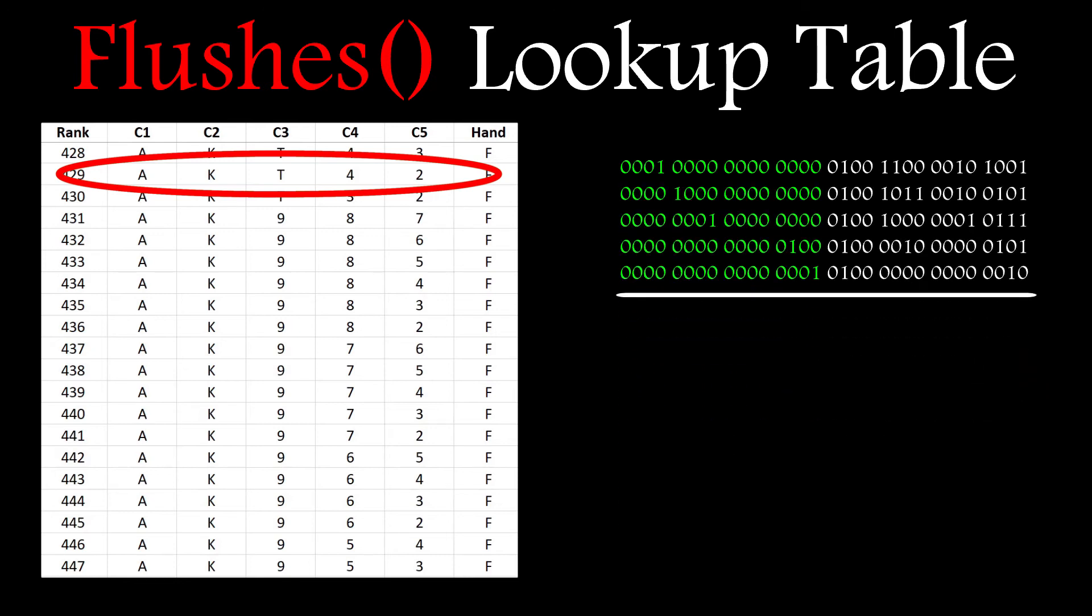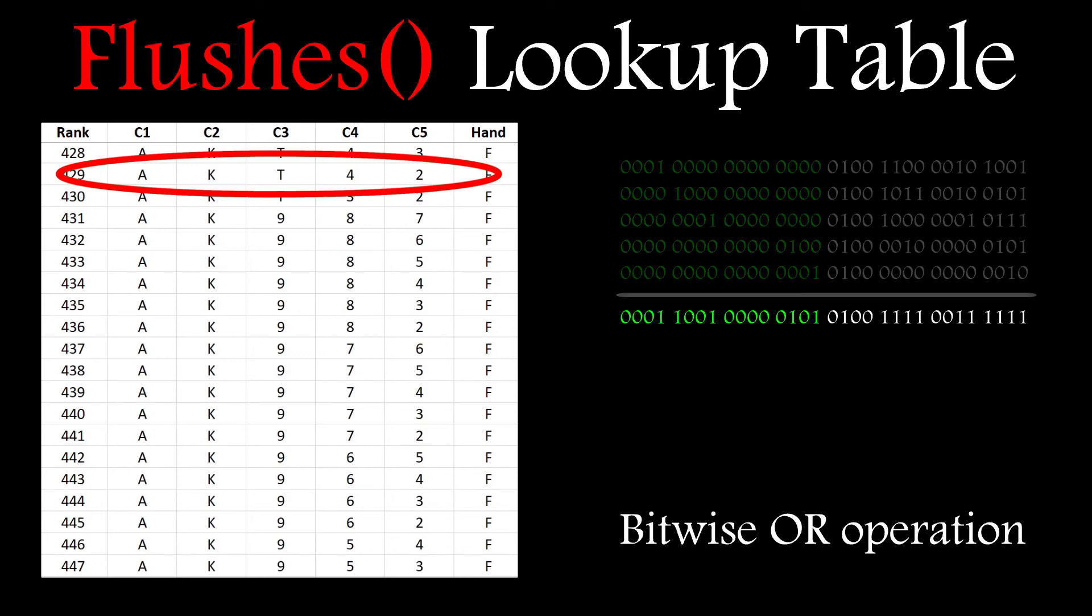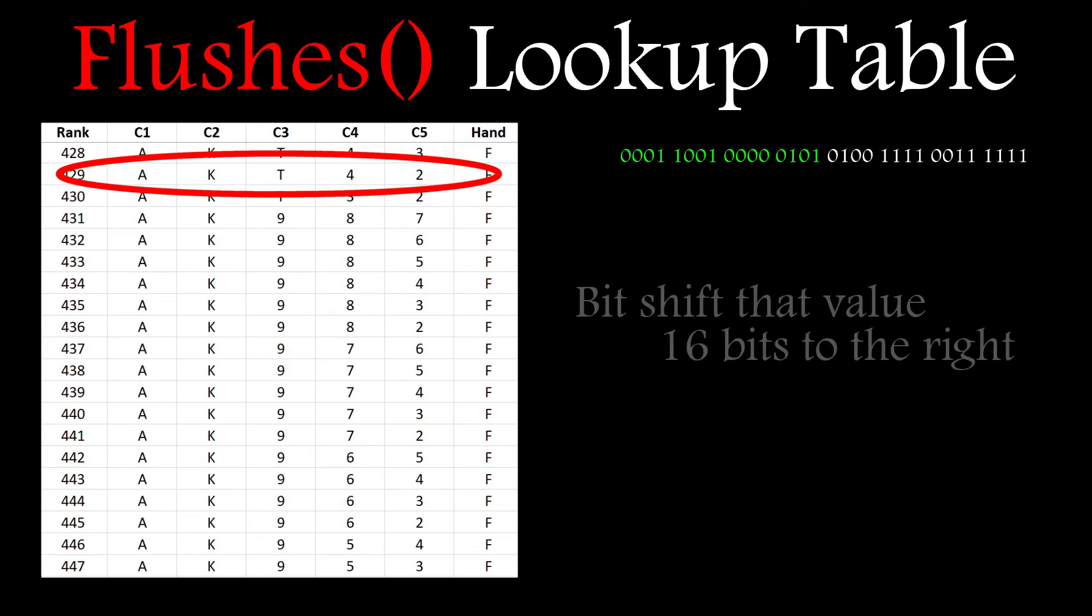I need to perform a bitwise OR operation on the five numbers to extract all the card values and then shift it to the right by 16 bits. The end result is a single number.